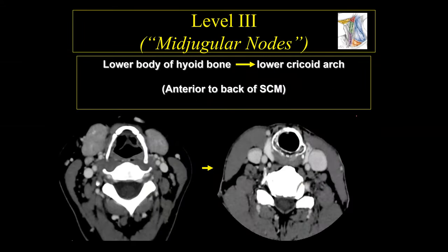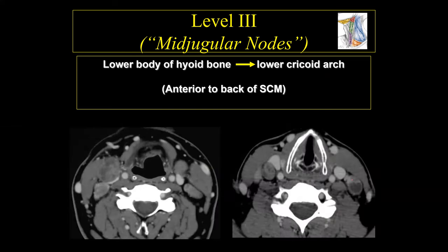Level 3 lymph nodes run from the base of the hyoid bone all the way down to the base of the cricoid cartilage — our two key landmarks. A line connecting the back of the sternocleidomastoid muscle defines this region. For example, a lymph node at the level of the cricoarytenoid joint, below the hyoid bone but above the cricoid, is a level 3 lymph node.